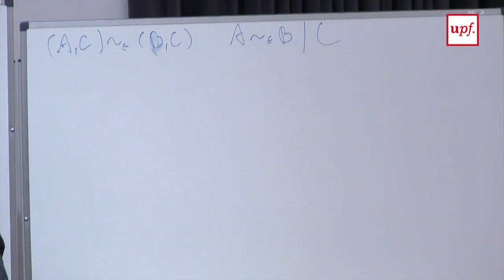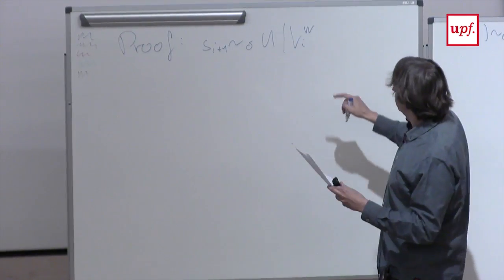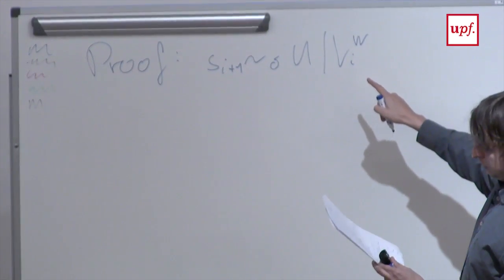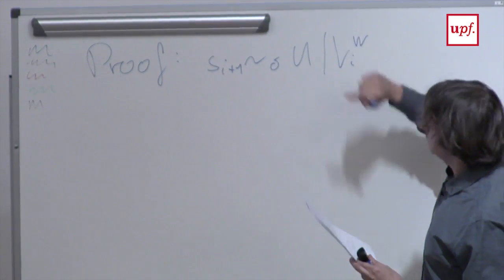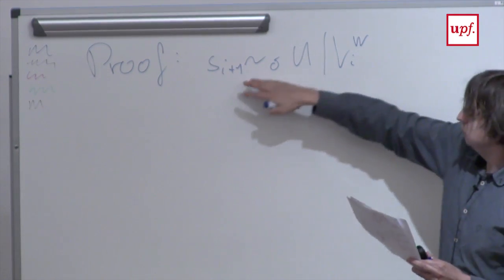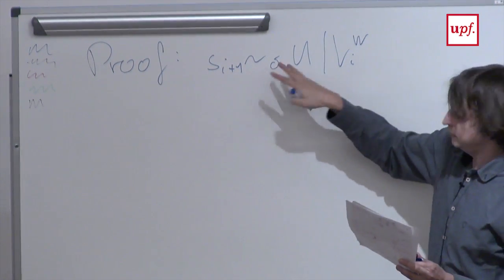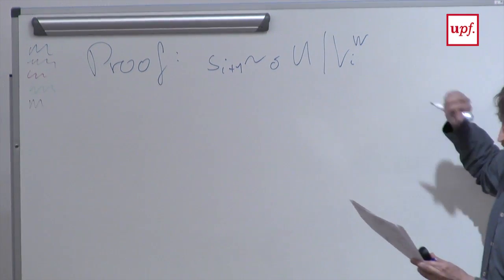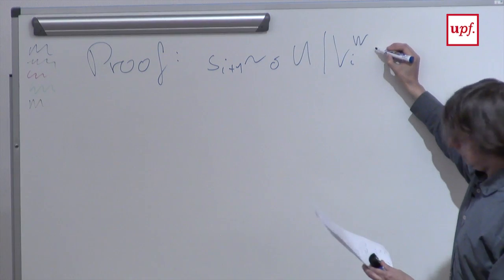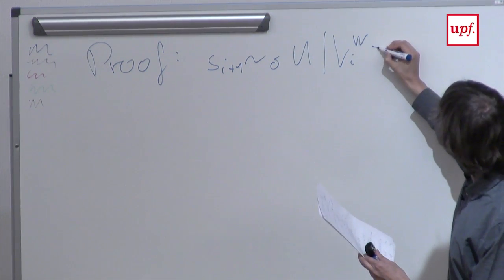Once I prove these implications, we're done. Because initially S1 is zero-close — it's exactly identically distributed to the uniform distribution. S1, Q, W are sampled independently, so S1 is perfectly uniform.